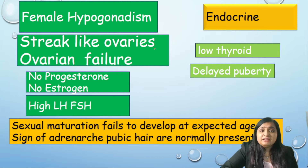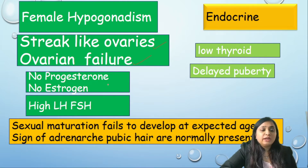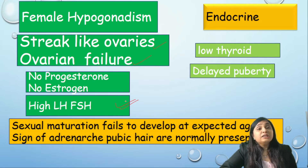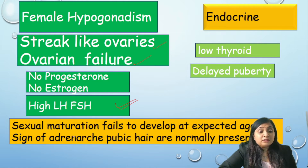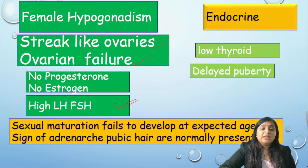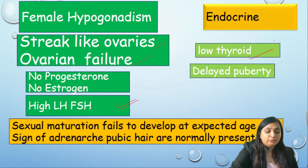The second important parameter is hypogonadism. There are streak-like ovaries and ovarian failure, so there is no progesterone and estrogen. Because of high feedback, there is a high level of LH and FSH. There is delayed occurrence of puberty, but signs of adrenarche like pubic hair are normally present. There is also low thyroid hormone.